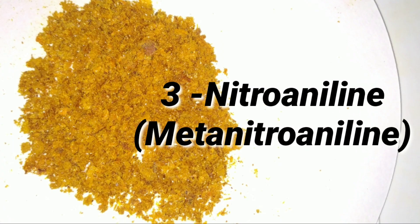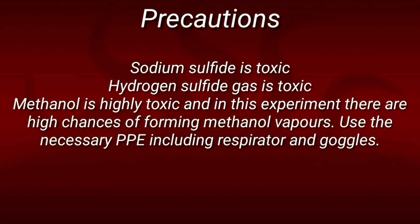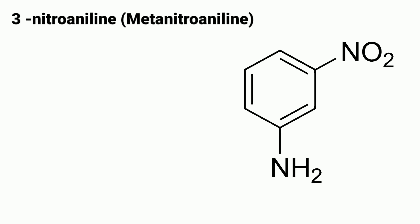Hello friends, in this video we will synthesize 3-nitroaniline from 1,3-dinitrobenzene. 3-nitroaniline is an aniline compound carrying a nitro functional group at the meta position, hence called metanitroaniline. I will be converting this to metanitrophenol in one of my upcoming videos.